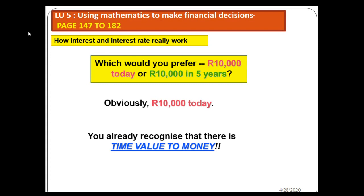Unlike waiting five years when that money is only equivalent to seven thousand, you can have it now, invest it now, and after five years you can have that ten thousand plus the interest in the future.